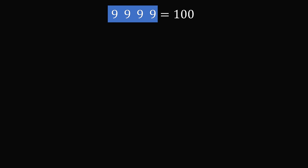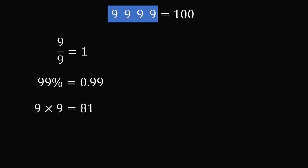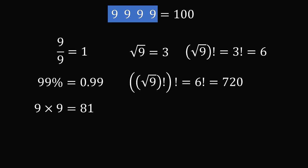From the four nines, what numbers can we make? Well, 9 divided by 9 equals 1. 99% equals 0.99. 9 times 9 equals 81. The square root of 9 equals 3. If we take the factorial of that, 3 factorial equals 6. We can again take the factorial: 6 factorial equals 720. Thinking trigonometrically, cosine of 0 degrees equals 1, and every multiple of 360 degrees gives the same result, so cosine of 720 degrees also equals 1. We'll use all these facts to come up with solutions.